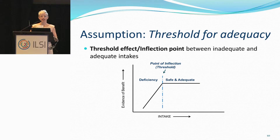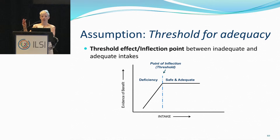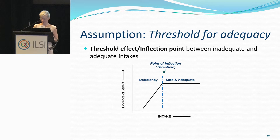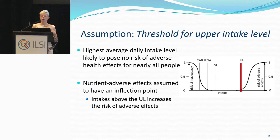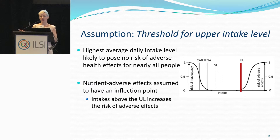The next assumption is the idea of a threshold for adequacy. In this model, as intakes increase, your risk for inadequate intakes is decreased, and at some point you reach an adequate and safe level, with an inflection point between the two. There's also a threshold model at the upper intake — at a certain level of intake towards the higher end, you will start to observe adverse effects, giving you that threshold effect.